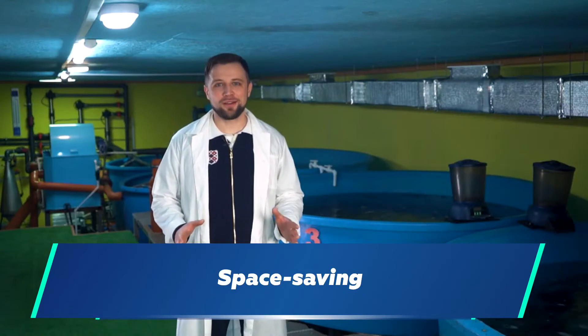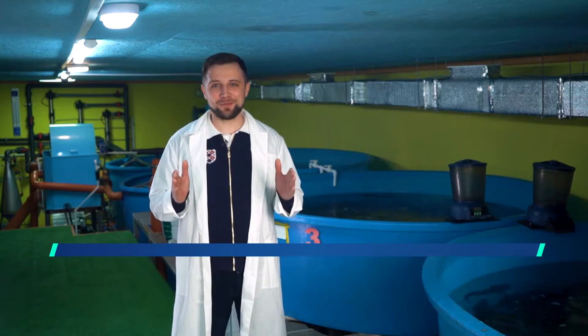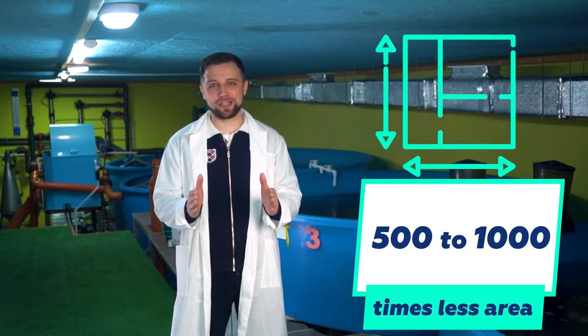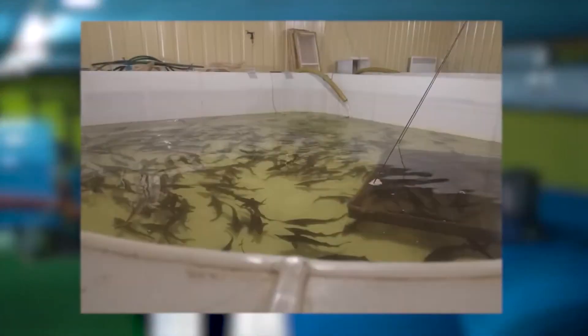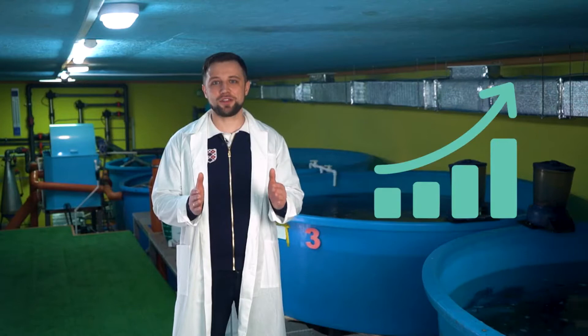Reason 1. The first reason is space saving. Imagine a RAS farm located in a building that takes around 500 or even 1,000 times less area than a pond. Yes, it sounds crazy, but this is due to high stocking density and faster growth compared to a pond. All of this is possible thanks to creating optimal conditions.